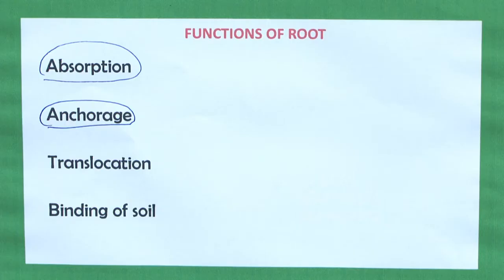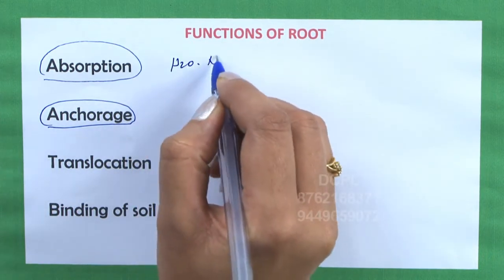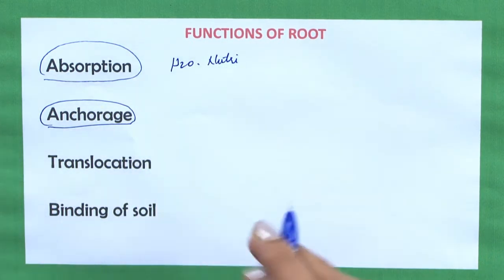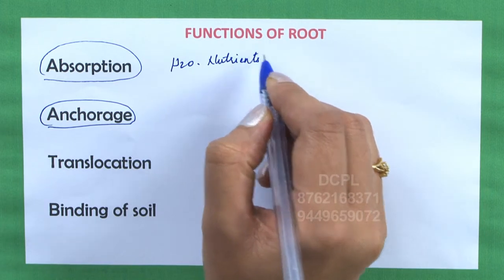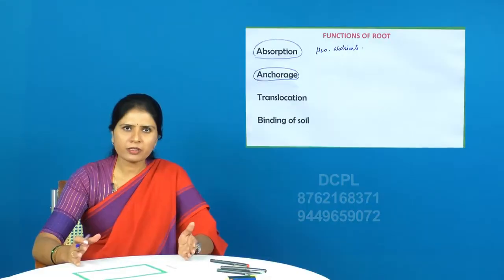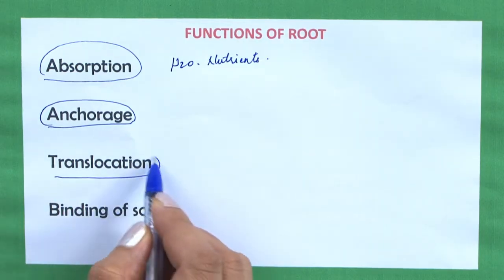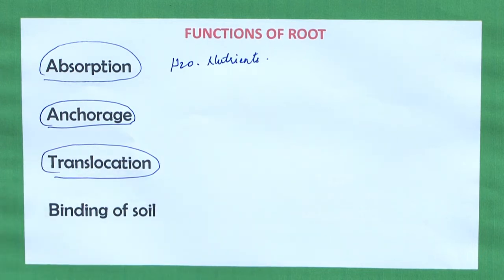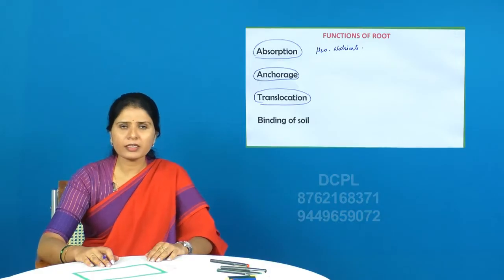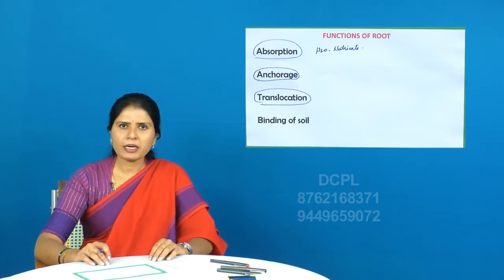Next is absorption. The roots help in the absorption of water and nutrients from the soil surface, and they pass on the water and nutrients to the aerial parts of the plant body. That procedure of passing on to the aerial parts is called translocation, which is done by the conducting tissues — xylem and phloem.